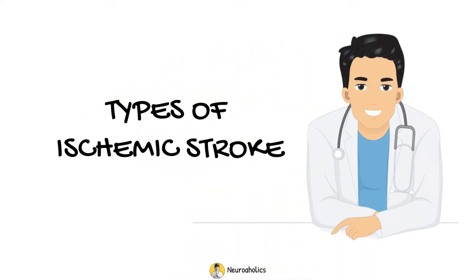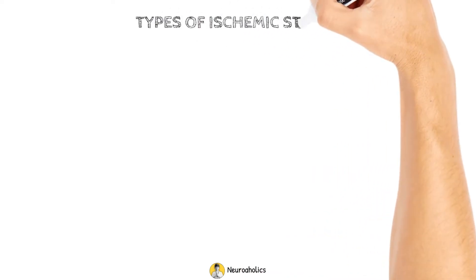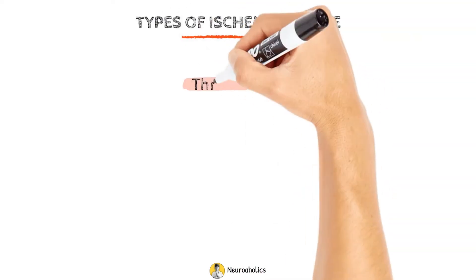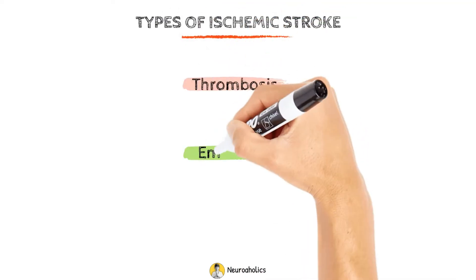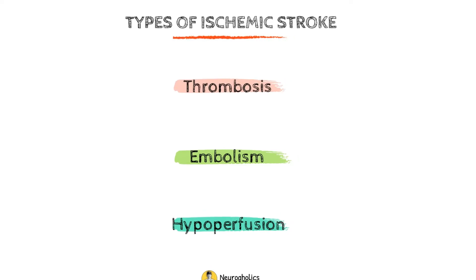Types of ischemic stroke. Three of the most common types of brain ischemia include thrombosis, embolism, and hypoperfusion.